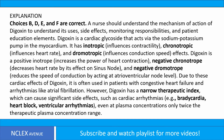Digoxin is a cardiac glycoside that acts via the sodium-potassium pump in the myocardium. It has inotropic influences — affecting contractility — chronotropic influences — affecting heart rate — and dromotropic influences affecting conduction speed. Digoxin is a positive inotrope, increasing the power of heart contraction; a negative chronotrope, decreasing heart rate via its effect on the sinus node; and a negative dromotrope, reducing the speed of conduction by acting at the atrioventricular node level.